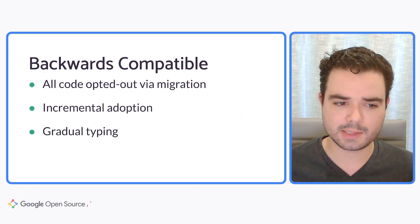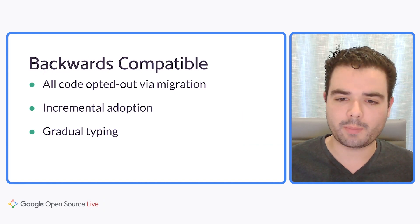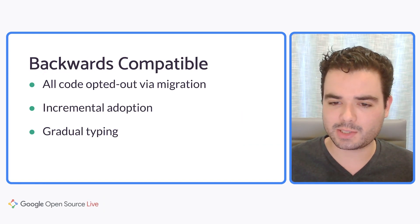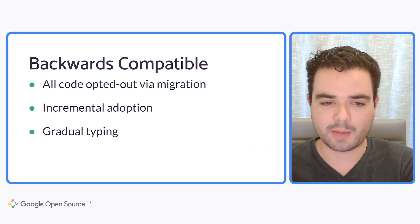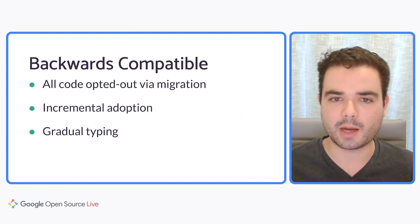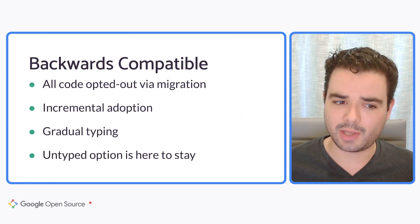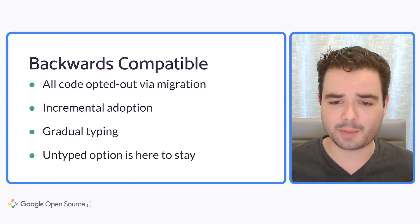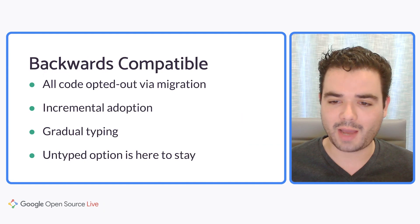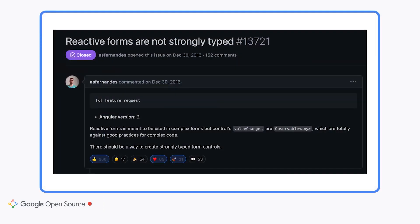Typed forms support gradual typing. You can freely mix the old untyped and the new typed classes even in the same form, such as putting an untyped form control inside of a form group. The untyped option is not going anywhere — it's actually necessary in quite a few cases. The typed forms issue on GitHub was several years old and was actually our top GitHub issue, so it was less a matter of if and more a matter of how.